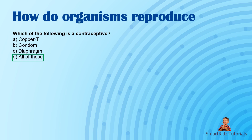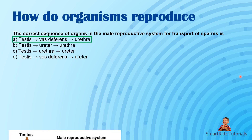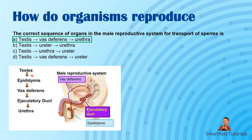The correct sequence of organs in the male reproductive system for transport of sperms is: testes, vas deferens, urethra. Have a look at this diagram — testes, epididymis, vas deferens. Since we are given only three of them, that eliminates the ones in between: testes, vas deferens, and urethra. Note that the urethra is common to both the urinary system and the male reproductive system.